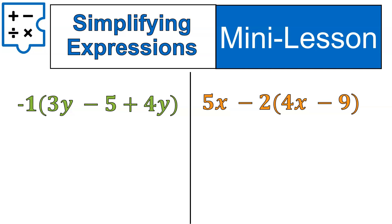3, 2, 1, go! All right, let's take a look. What I do when I see these huge sets of parentheses is I just simplify. I multiply whatever is outside times each term inside. So negative 1 times 3y gives us negative 3y. Negative 1 times negative 5 gives us positive 5. Negative 1 times 4y will give us negative 4y.